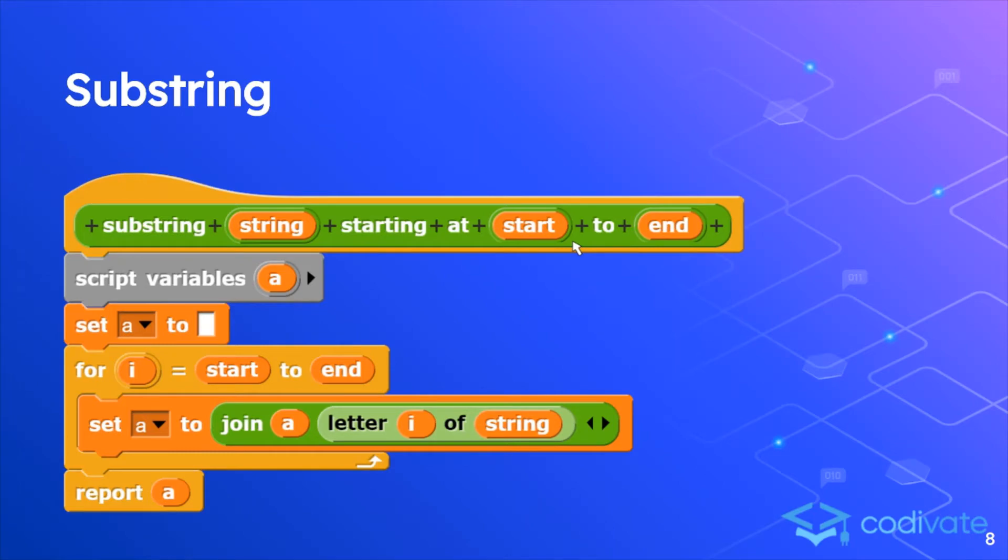This is a substring function with multiple parameters. A script variable is a temporary variable that isn't stored outside of this function. The script variable is set to nothing and then it becomes equal to itself plus a certain letter of the string until the end of the for loop. Pause the video and take a minute to understand what exactly this script is doing.